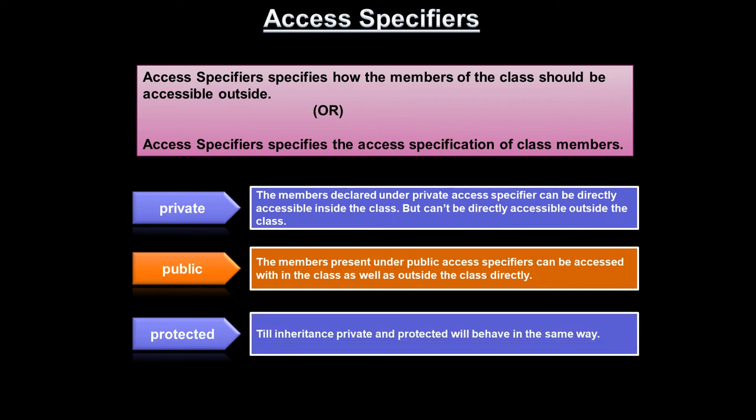The third access specifier is 'protected'. Until we reach the topic of inheritance, private and protected behave in the same way. So from today until we reach inheritance, I will only use private and public access specifiers. There is one significant difference between private and protected, which we will discuss when we reach inheritance.